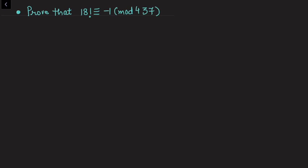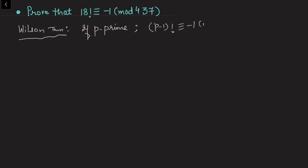In this video I want to prove that 18 factorial is congruent to minus 1 modulo 437. To prove this I will be using Wilson's Theorem. Wilson's Theorem says: if p is a prime, then (p minus 1) factorial is congruent to minus 1 modulo p.